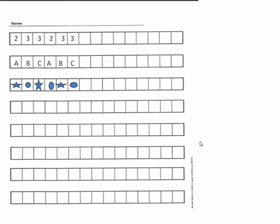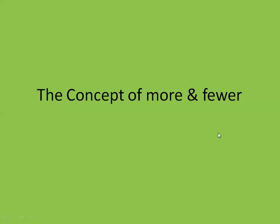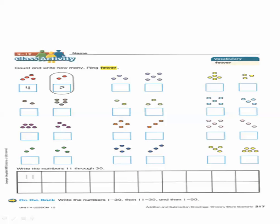Let's go to the concept of more and fewer. In this exercise we will count and write how many, then we will ring the fewer group. We have two groups — we will count the first one and write the number: one, two, three. Write three. Count the other group: one, two, three, four, five. Write five. Which group has fewer? This one — circle it.